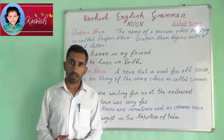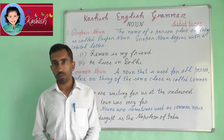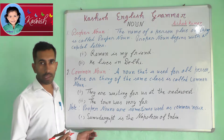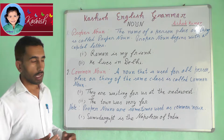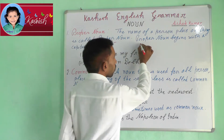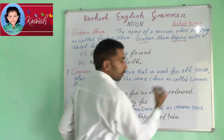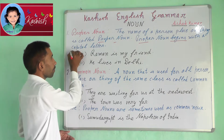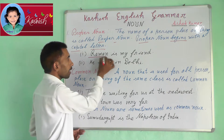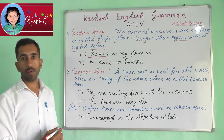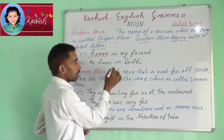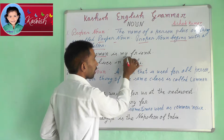First, Proper Noun. The name of a specific person, place or thing is called a Proper Noun. Proper Noun begins with a capital letter. For example, Raman is my friend. He lives in Delhi.